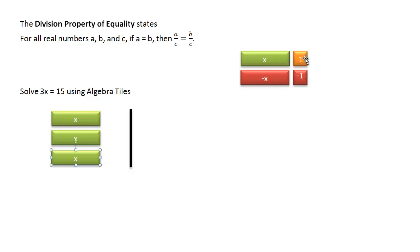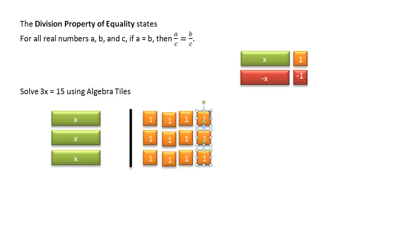And then let's go get 15 of these one tiles for the opposite side of the equation. So there's one, two, three, and then if we hold our Shift key down, we can select all three of them, and now holding the Ctrl key down, we'll get 6, 9, 12, and 15 tiles.